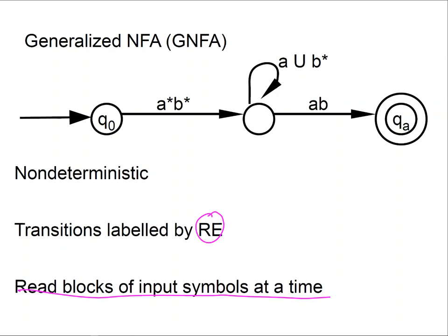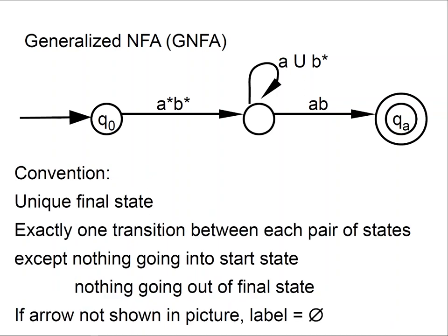We're going to have some conventions: we're going to have a unique final state, we're going to have exactly one transition between each pair of states, nothing that goes into the start state, and nothing that goes outside of the final state. If an arrow is not shown in the picture, it means that the label is the empty set. These conventions will be useful when we do the proof — the steps will be simpler if we have them.